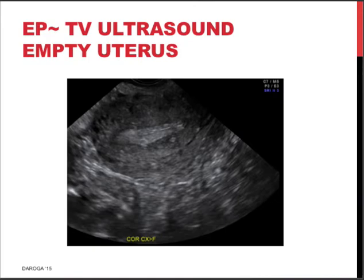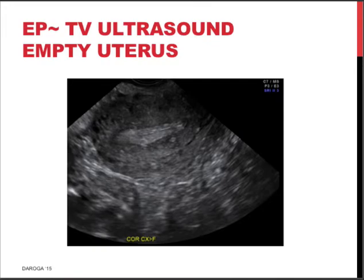Here is another ultrasound scan showing a section of the uterus. This is the endometrium and the uterine cavity — which is empty. There is no gestational sac, no yolk sac, no embryo visible. In the past, this empty uterine cavity was the primary diagnostic criterion underpinning suspicion of an ectopic pregnancy — the absence of an intrauterine pregnancy in a lady with a positive pregnancy test. However, nowadays with very sensitive ultrasound scans we can usually visualize the ectopic pregnancy directly.